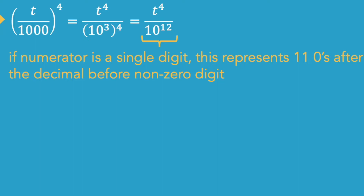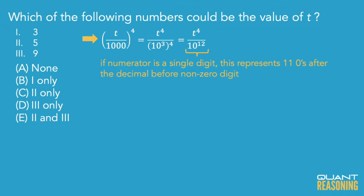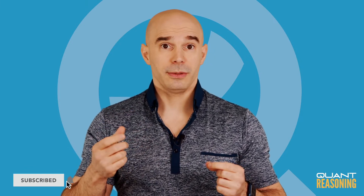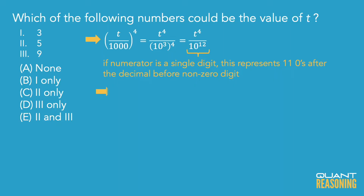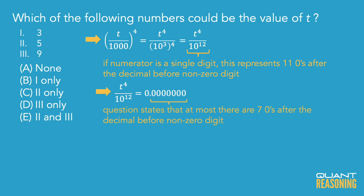Now they're telling us that at most there are seven zeros — fewer than eight zeros — between the decimal point and the first non-zero digit. So what does that tell me about the numerator? If the numerator was a single digit, there would be 11. Two digits: 10. Three digits: 9. Four digits: 8. So I would need five digits in the numerator in order to make it at most seven. I need at least five digits in the numerator.